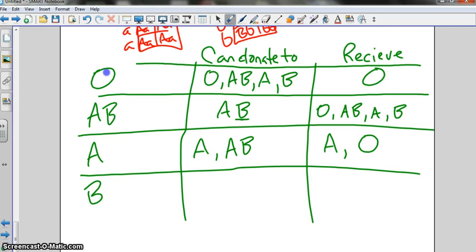If I'm type B, who can I donate to? B and AB. All right, good, I can donate to B, and I can donate to AB, and I can receive from? BO. I can receive from body odor, right? BO. Okay.